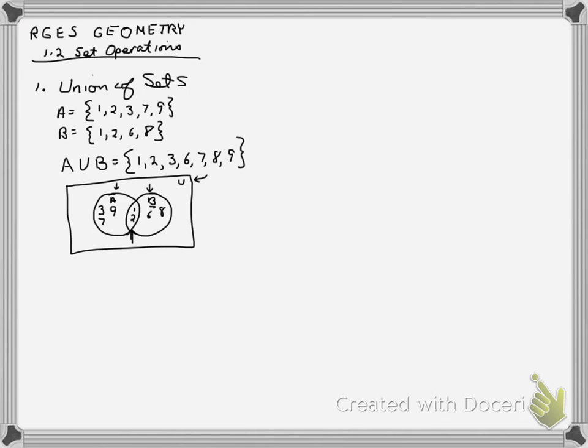Now, if I were to shade A union B, I would shade all of this, all of what they have in common, and all of this. So hopefully that's clear to you. And you can look in your book for a little bit better picture of shading. Maybe I'll use another color here for that.